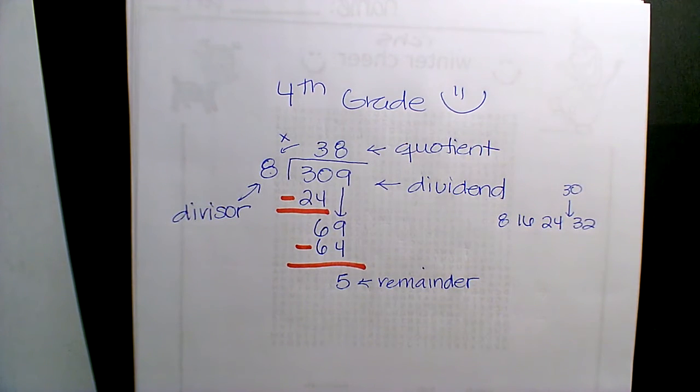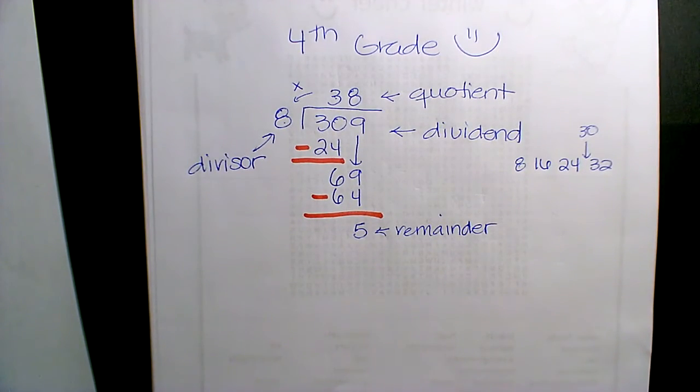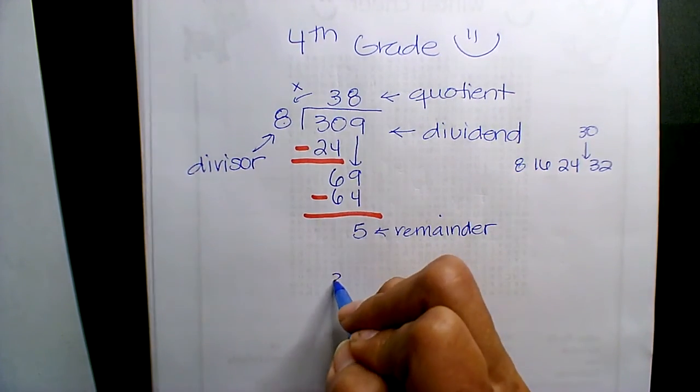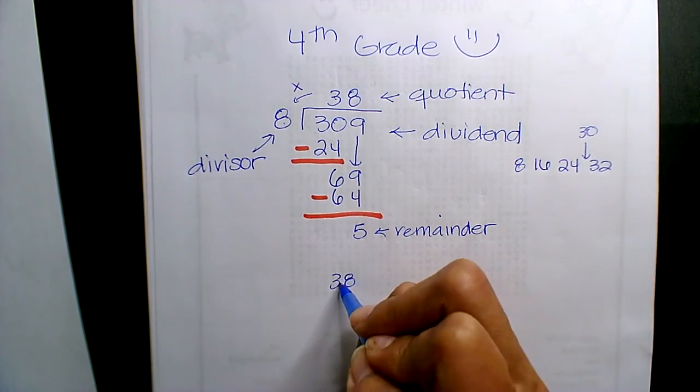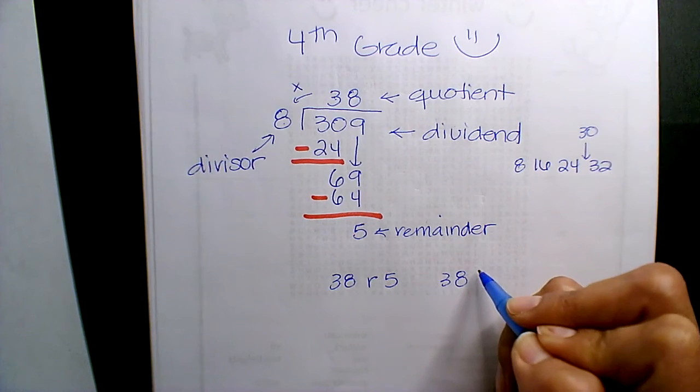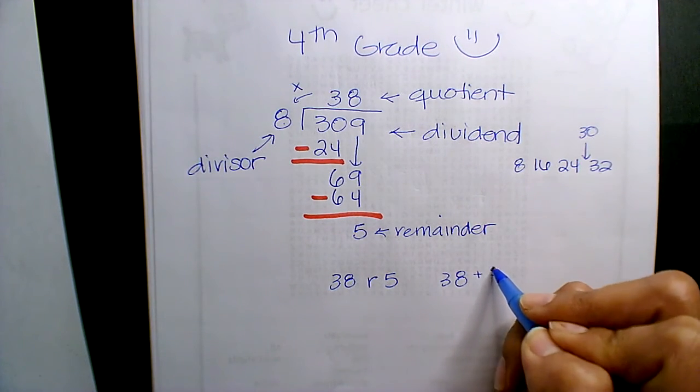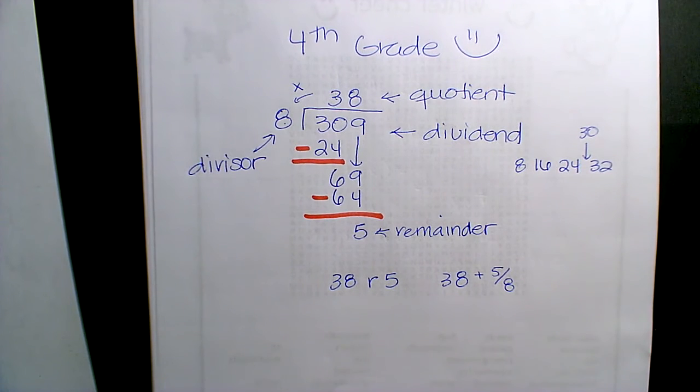Yes? So the way, again, this kind of had to do with your teacher, but your remainder, some of you wrote 38, remainder 5. Some of you did 38 with a fraction, 5 over 8. Do you guys kind of remember that? It was one or the other. And that's because you could express it either way with a quotient.